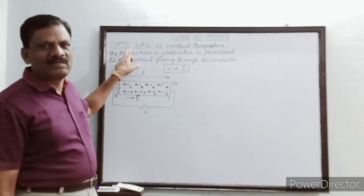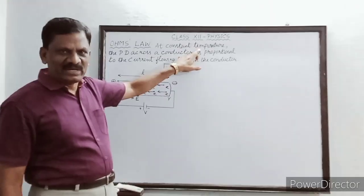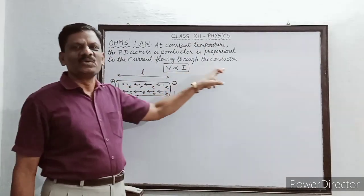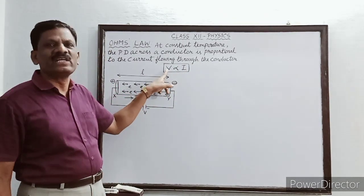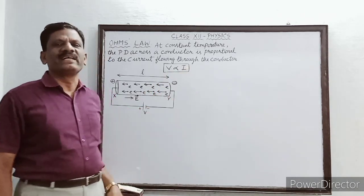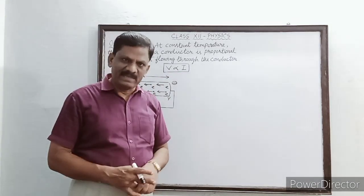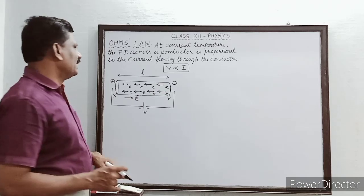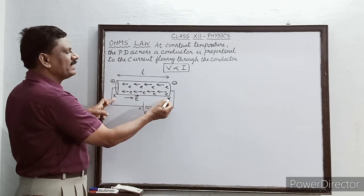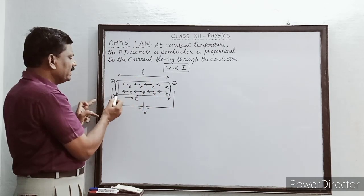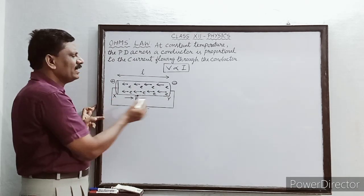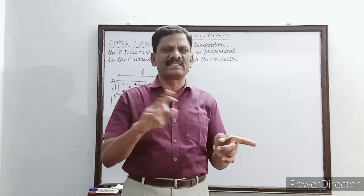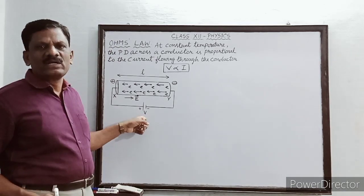Now we will see Ohm's law. The statement of Ohm's law: at constant temperature, the potential difference across a conductor is proportional to the current flowing through the conductor — V is proportional to I. In the diagram, XY is a metallic conductor of length L. End X is connected to the positive terminal of a battery and has a positive potential, and end Y is connected to the negative terminal and has a negative potential, so there is a potential difference V between the ends X and Y.